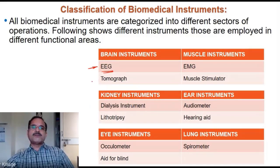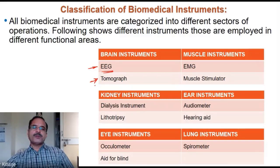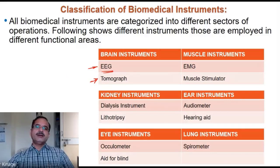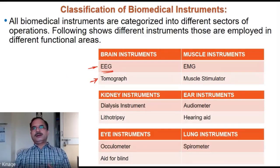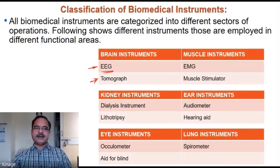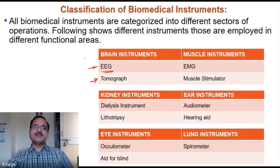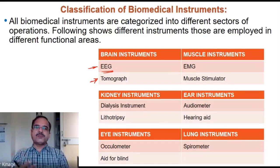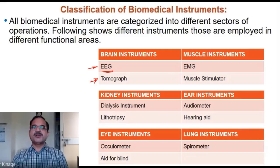The tomograph is an instrument that takes slices of a three-dimensional object. If there is a three-dimensional structure, it captures cross-sectional slices — that technique is called tomography.